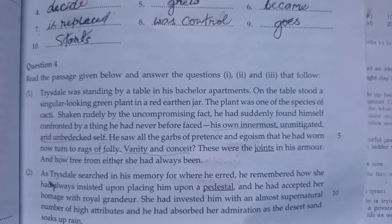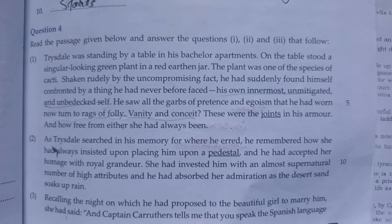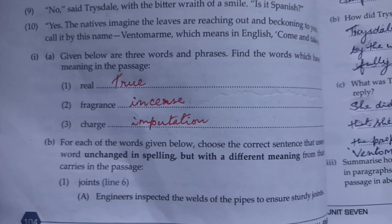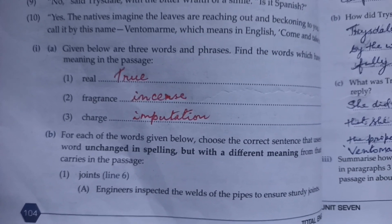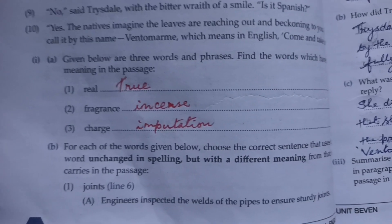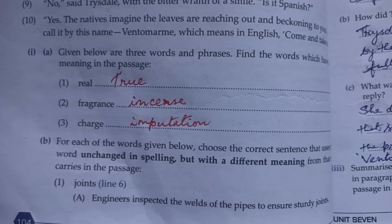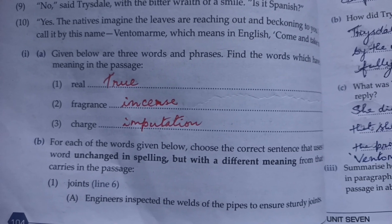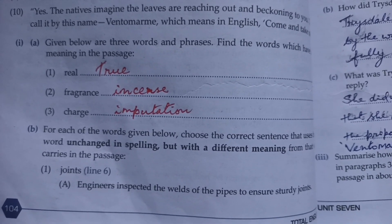Next, question number four: read the passage given below and answer the questions that follow. For part A, find words from the passage with similar meaning: first — real, which means true; second — fragrance, which means incense; third — charge, which means imputation.